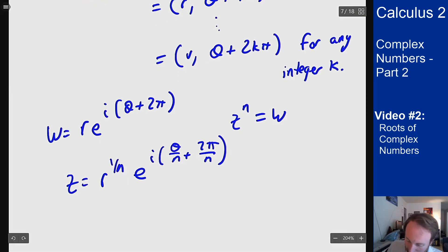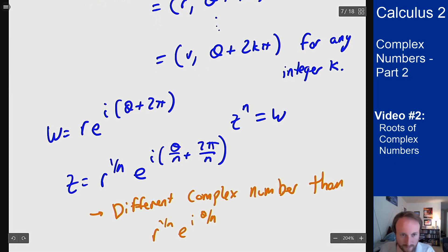This is a different complex number than the first z I had, r to the 1 over n e to the i theta over n. I've now found a second root here to work this out. I can keep plugging in different adjustments up here, multiples of 2 pi, until I get to 2n pi in which case I'll have an added 2 pi here and it'll cancel itself out.